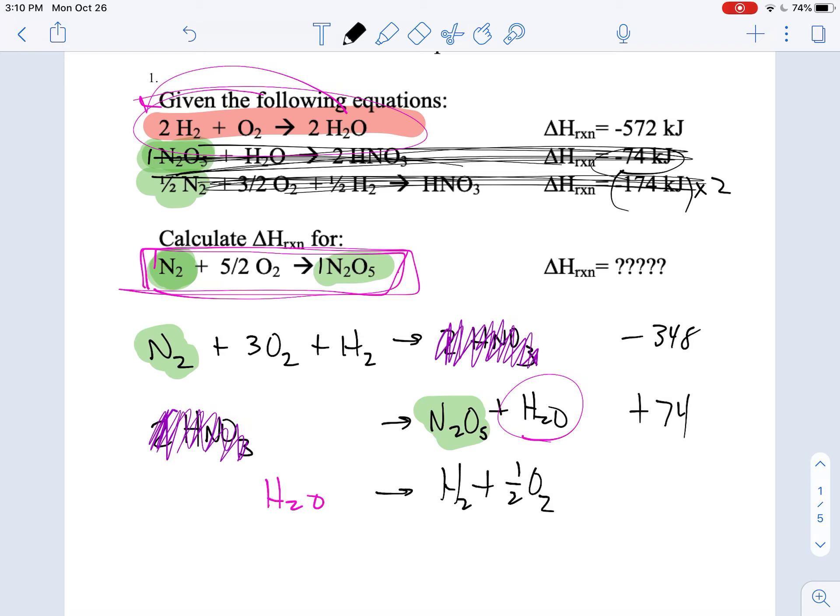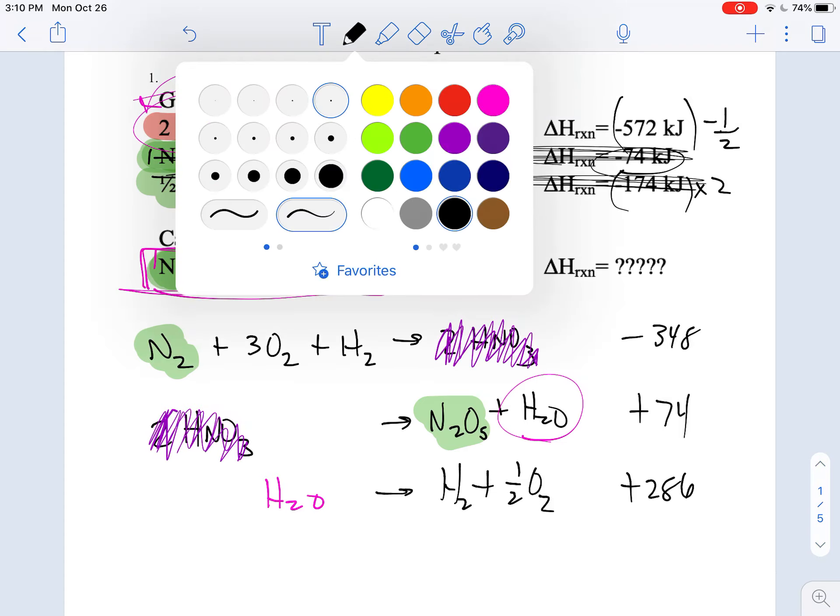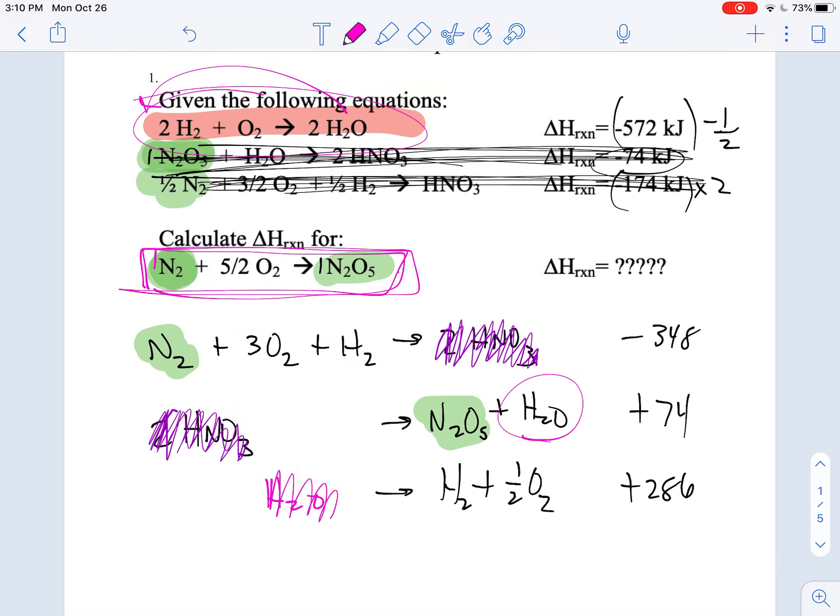And in flipping it and cutting it in half, I turn this into positive 286 because this guy here has to be multiplied by negative a half. Because I flipped it negative and I cut it in half. There's my half. And now check out what happens here guys. My H2O on the left and my H2O on the right are gone.